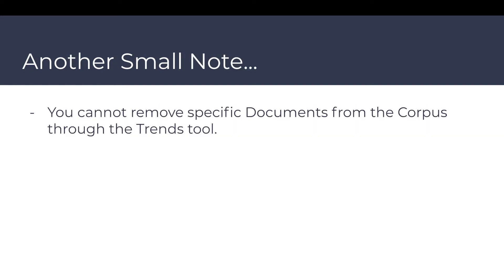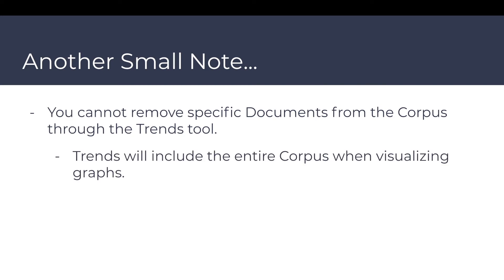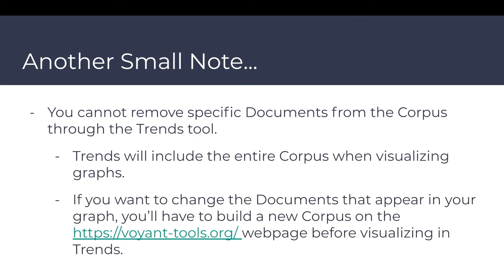You cannot remove specific documents from the corpus through the Trends tool — Trends will include the entire corpus when visualizing graphs. If you want to change the documents that appear in your graph, you'll have to build a new corpus on the voyanttools.org webpage before visualizing in Trends.